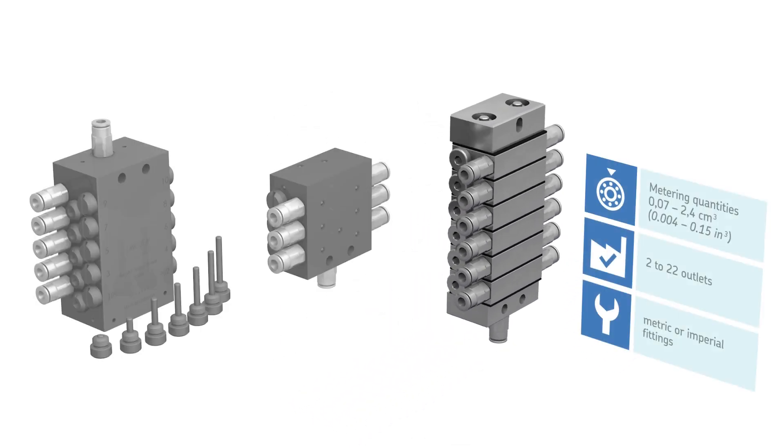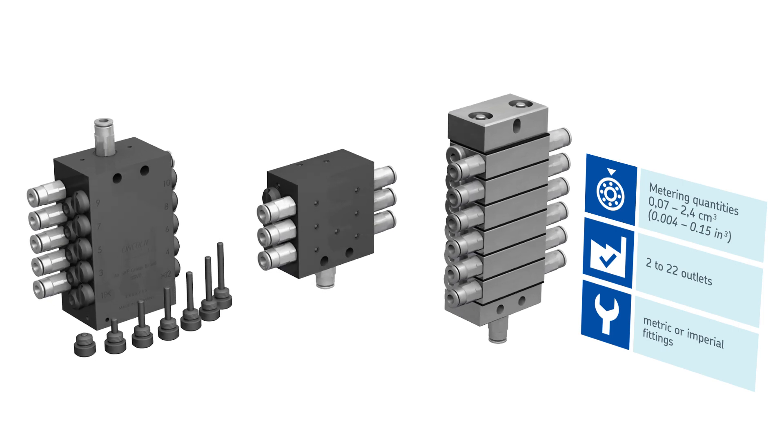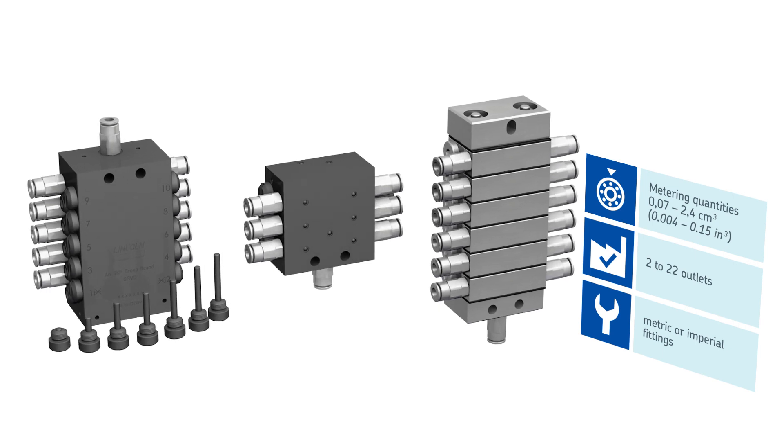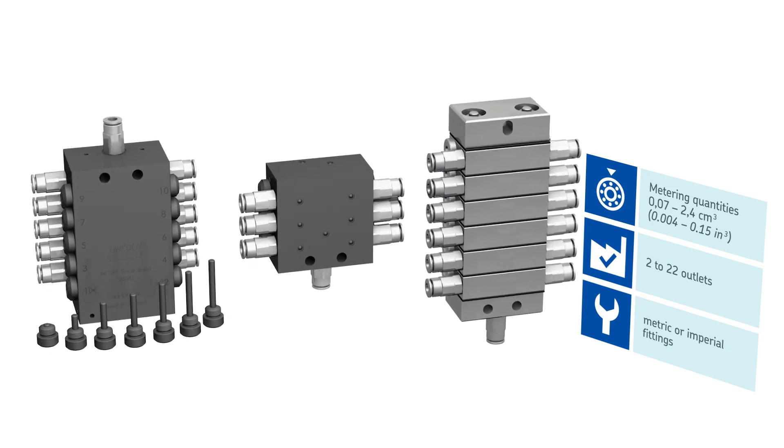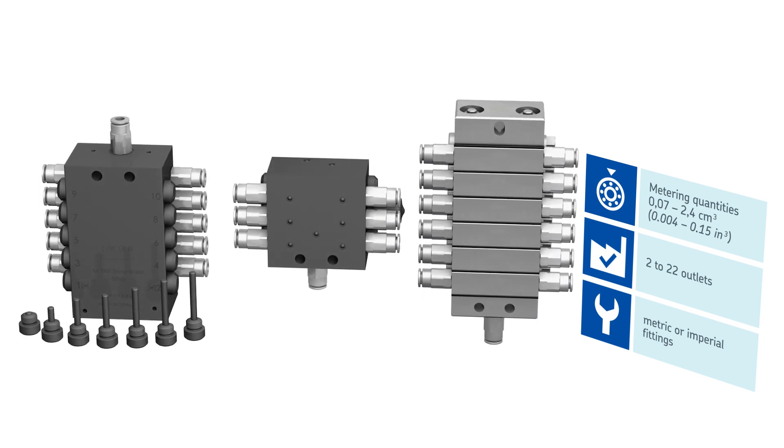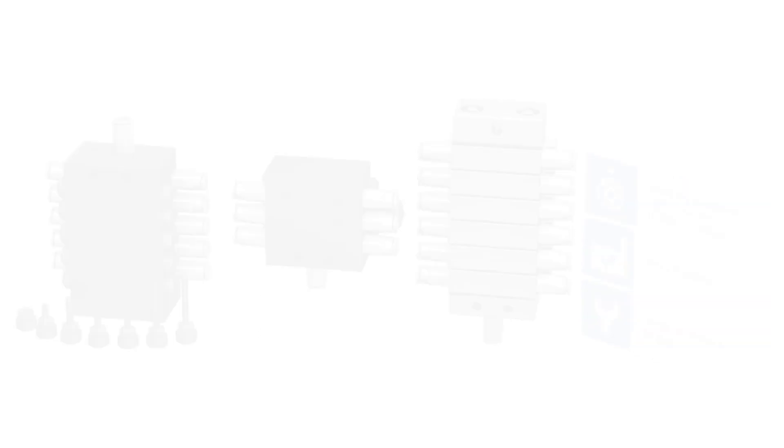In addition, they offer a wide range of metering quantities from 0.07 to 2.4 cubic centimeters (0.004 to 0.15 cubic inches) per outlet and cycle. Available models range from 2 to 22 and more outlets depending on system requirements.